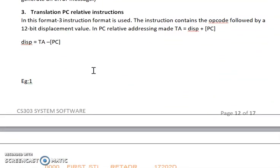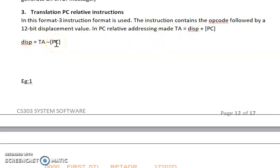For the translation of PC-relative addressing — format 3 instructions mainly use base-relative and PC-relative addressing. The instruction contains the opcode followed by a 12-bit displacement value. The PC-relative addressing target address is calculated by adding the displacement value with the program counter value. To find the displacement value, subtract the PC counter value from the target address. The assembler calculates the displacement value and does the corresponding translation.